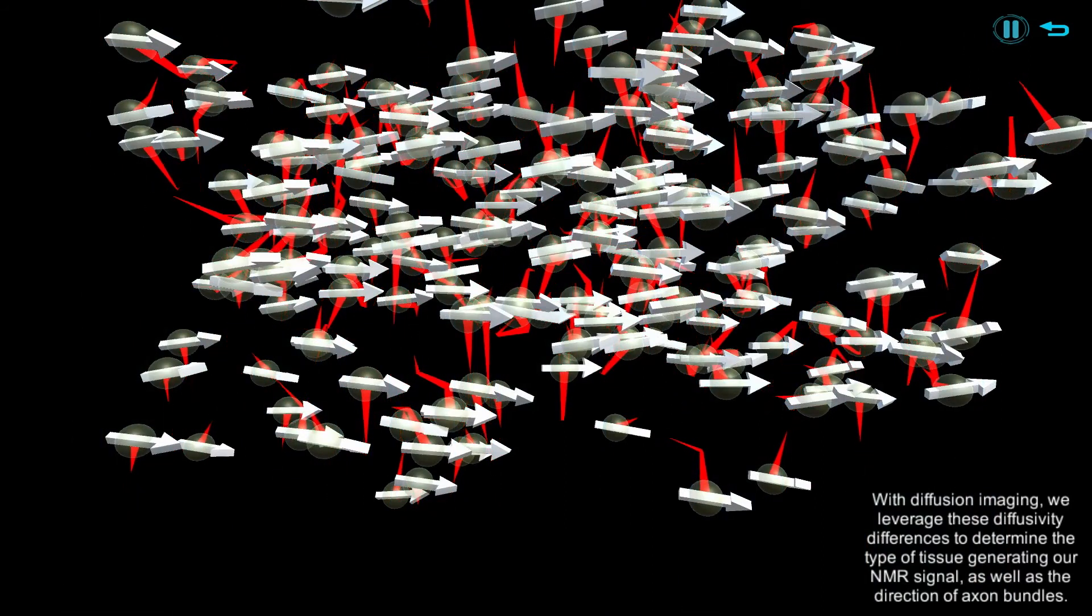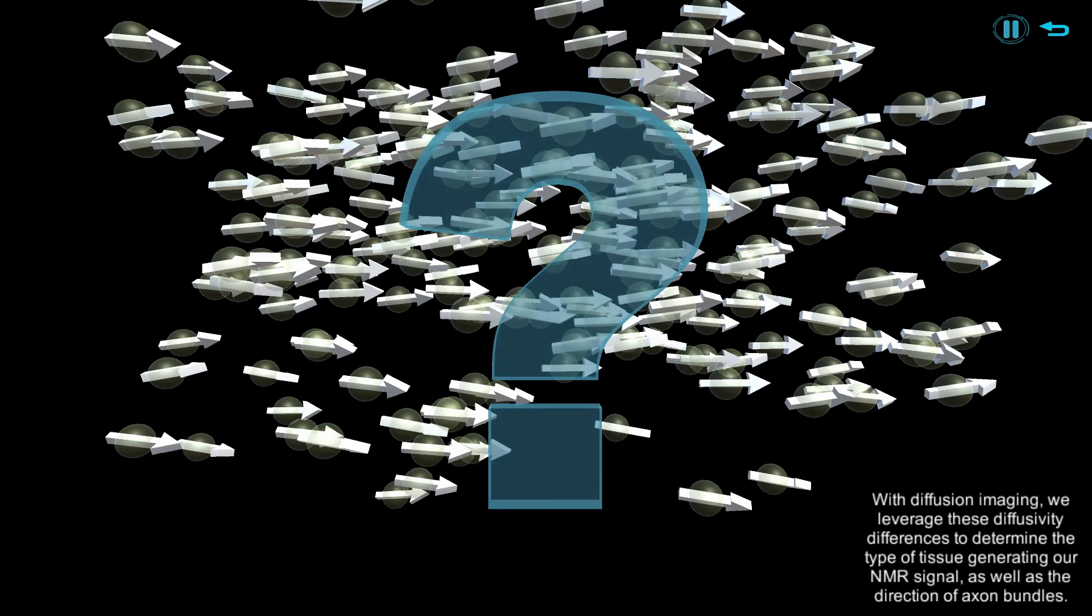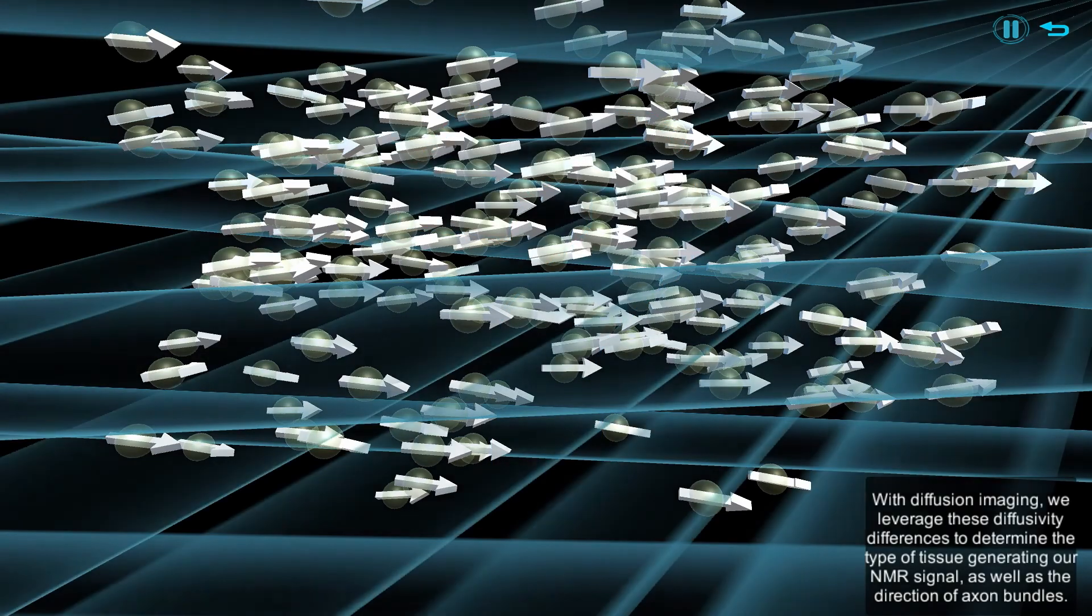With diffusion imaging, we leverage these diffusivity differences to determine the type of tissue generating our NMR signal, as well as the direction of axon bundles.